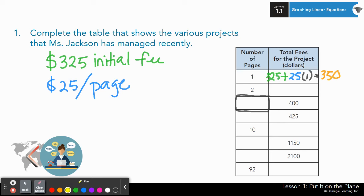Now at this time, set your timer for about four to five minutes. And I want you to work on your own or with a partner to fill in the blanks in this table. Start with two, then 10, and then 92. If you're struggling with going backwards, then continue with 400, trying to think about how many pages gave her that total amount. Four to five minutes, set your timer, pause here.